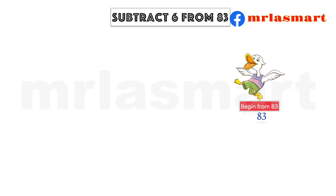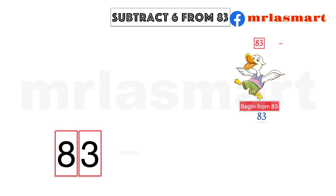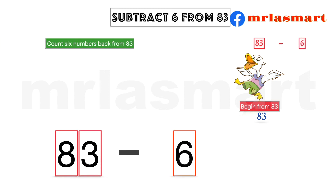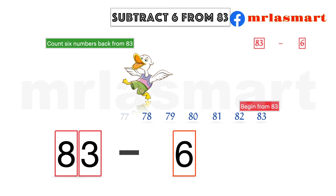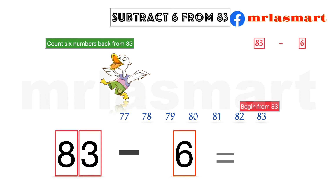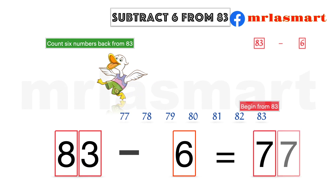Subtract 6 from 83. Begin from 83. Count 6 numbers back from 83. 83 minus 6 equals 77.